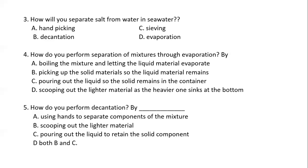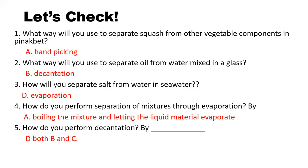Now let's do the checking. You can check it by yourself or you can ask somebody else to check your work. Ready? Let's begin. Number 1: The correct answer is letter A, Handpicking. Number 2: The correct answer is B, Decantation.